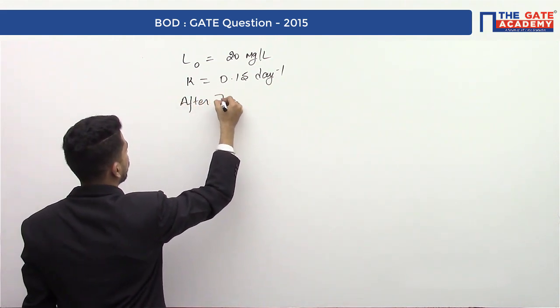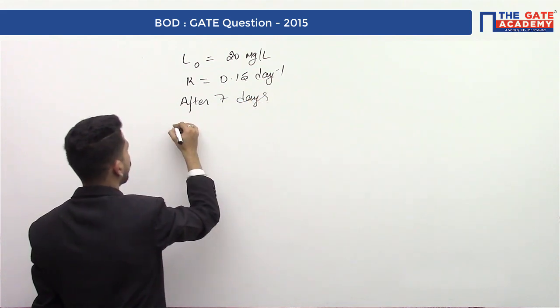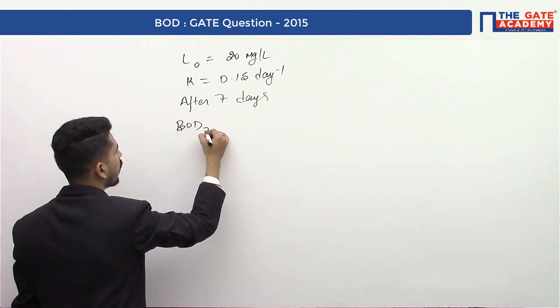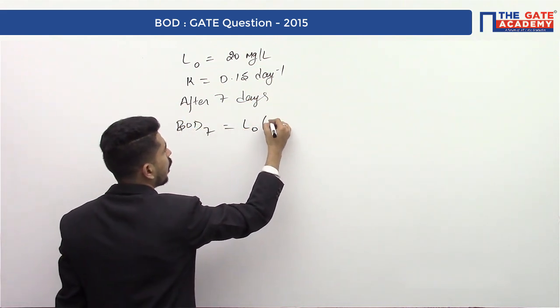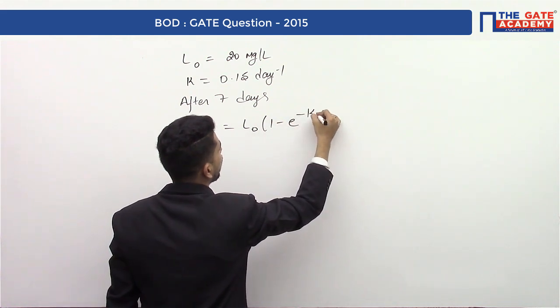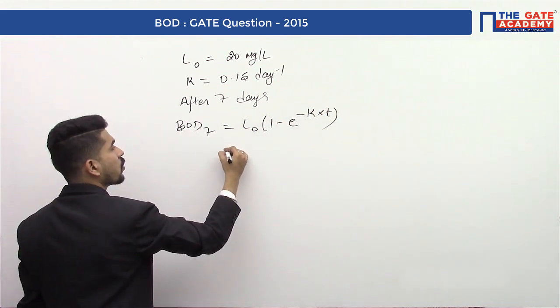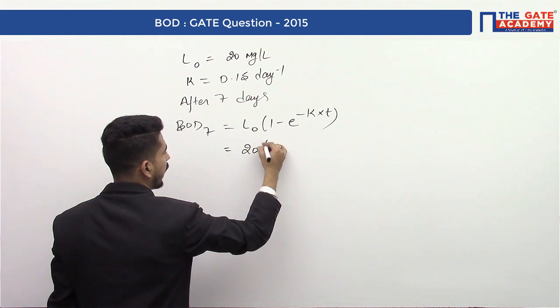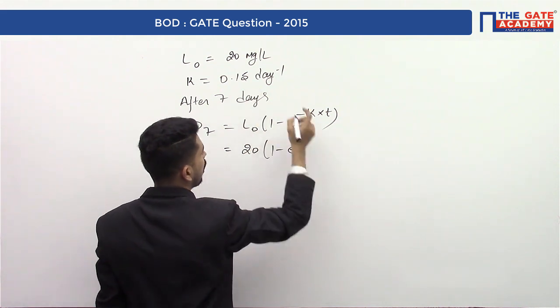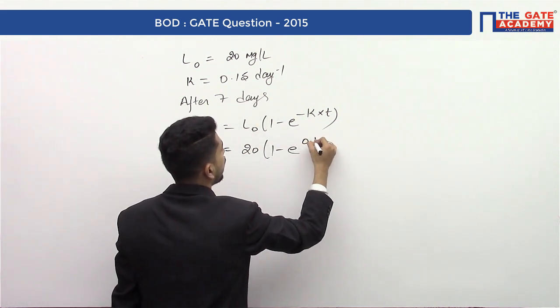Let us calculate. After seven days, BOD7 equals L naught times 1 minus e to the power minus k times t. So this L naught is given to us as 20, times 1 minus e to the power, k value is given to us as 0.15 times 7.